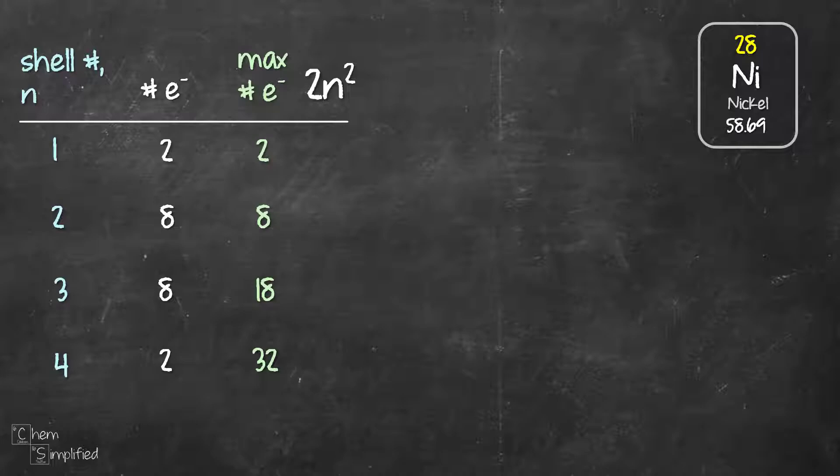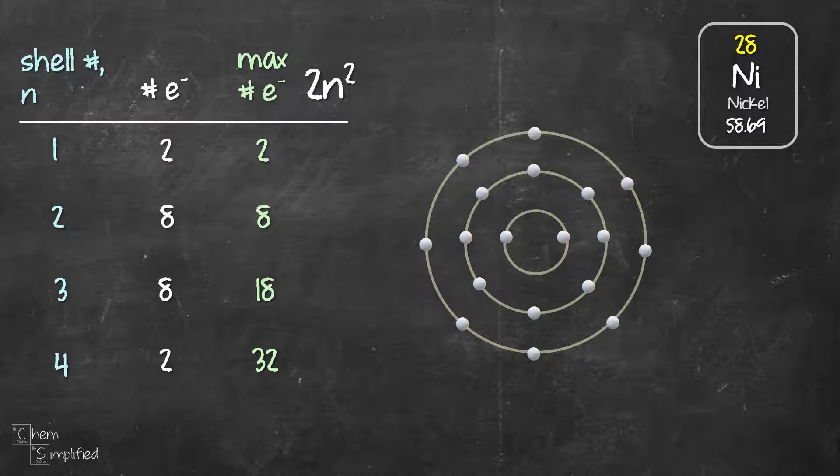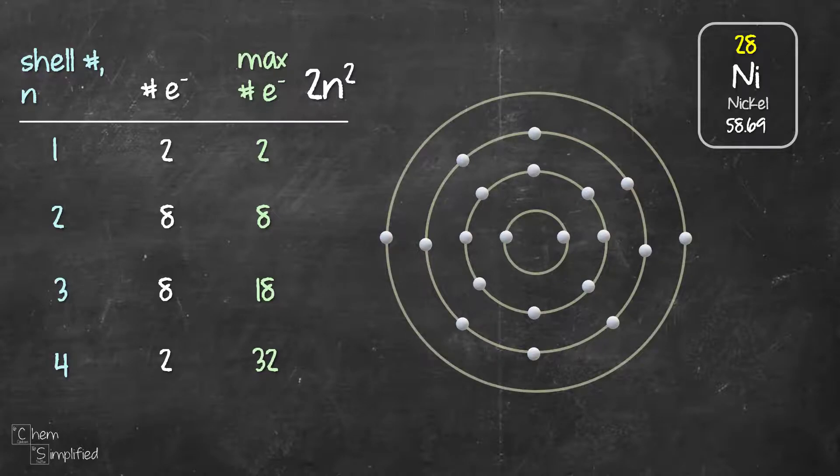Now let's see how we can make this work for nickel. The first two electrons will go to shell 1. The next 8 will go to shell 2. The next 8 will go to shell 3. We're not going to dump all the electrons in shell 3. We're going to go to shell 4 first and fill out the 2 over there. And now that we've used up 20 electrons,